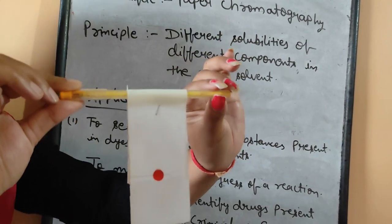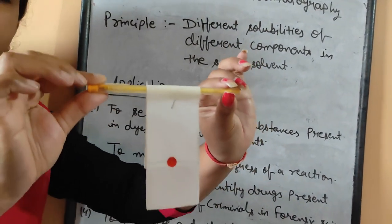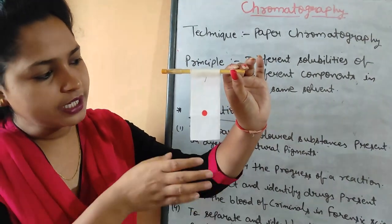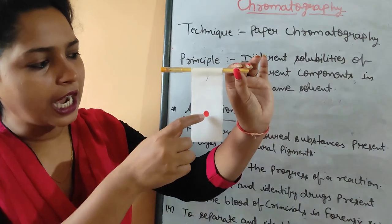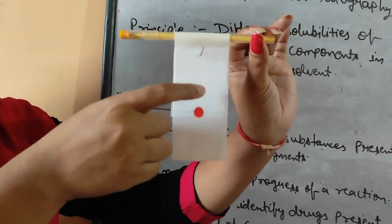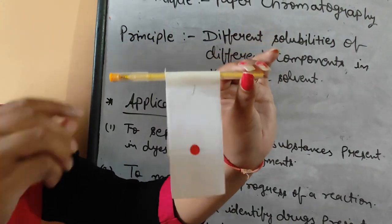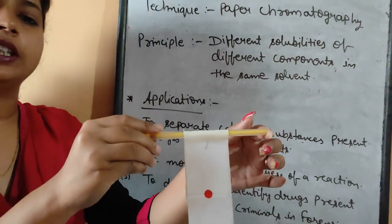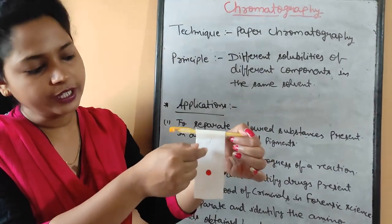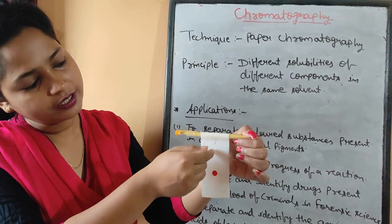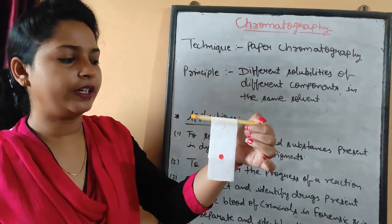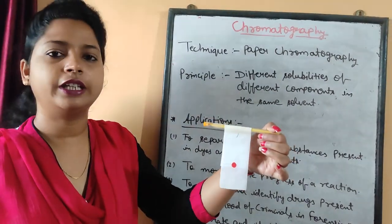Then we hold this chromatography paper in a beaker containing water. Keep in mind that the paper is placed in the water such that half of the spot is inside the water and half is outside the water. When we keep the paper in the beaker containing water, after some time we can see different color patterns appear on this paper. This is the method of separating different colors using the chromatography technique.